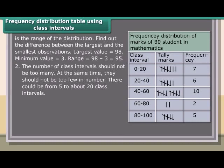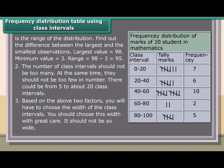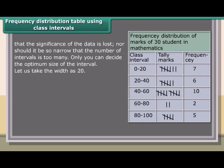The number of class intervals should not be too many or too few — there could be from 5 to about 20 class intervals. Based on the range and number of intervals, you will have to choose the width of the class intervals with great care. It should not be so wide that the significance of the data is lost, nor so narrow that the number of intervals is too many. Only you can decide the optimum size of the interval. Let us take the width as 20.